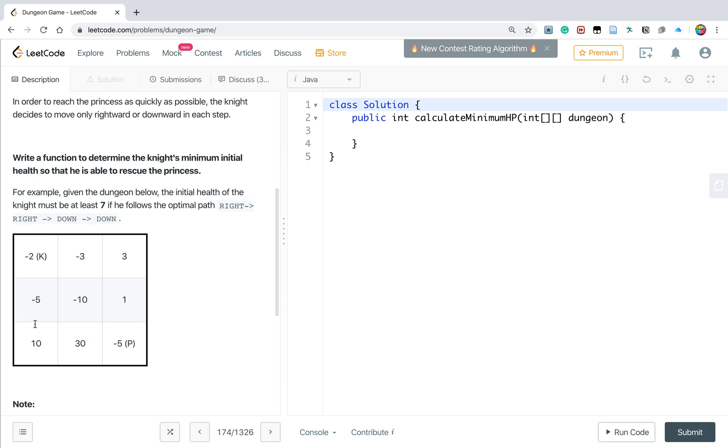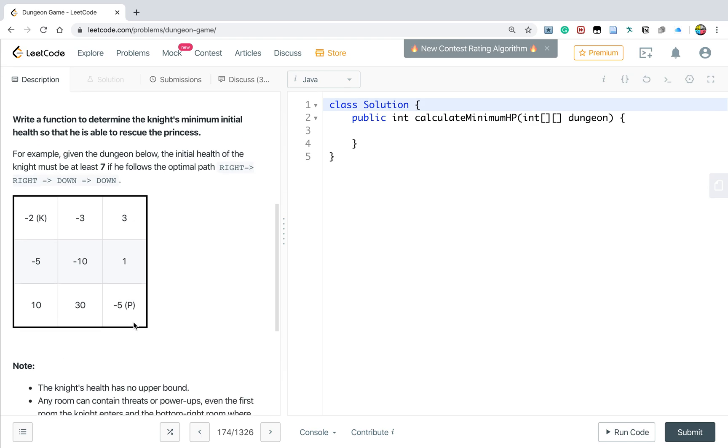So the question is, what's the minimum initial health point? How do you think about this problem?